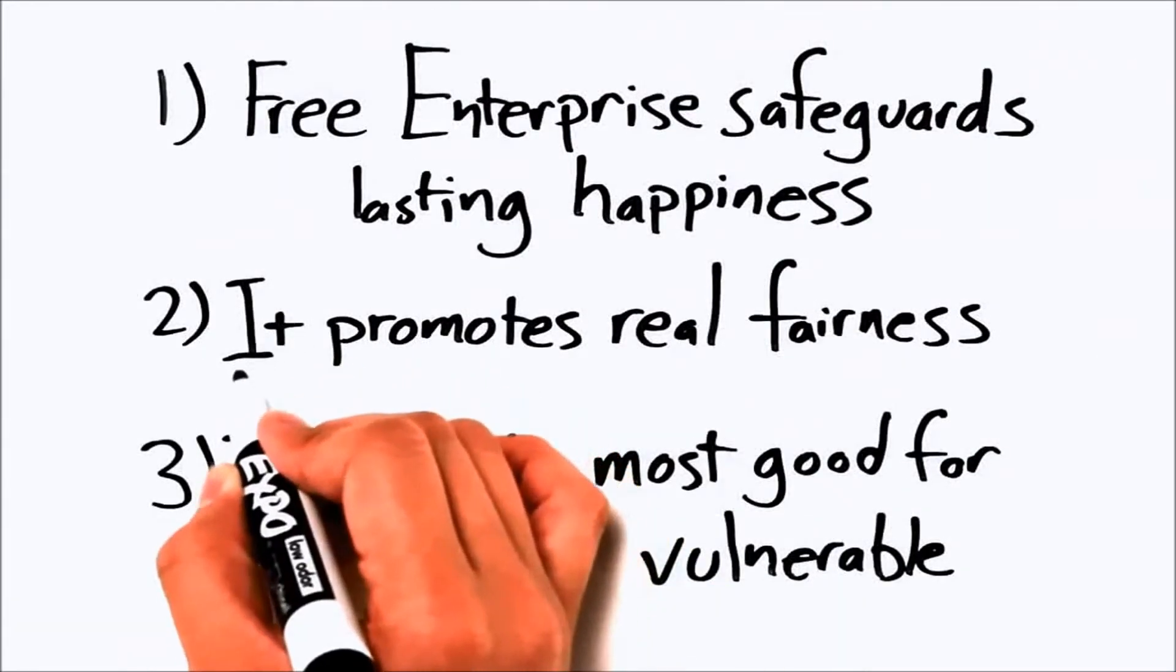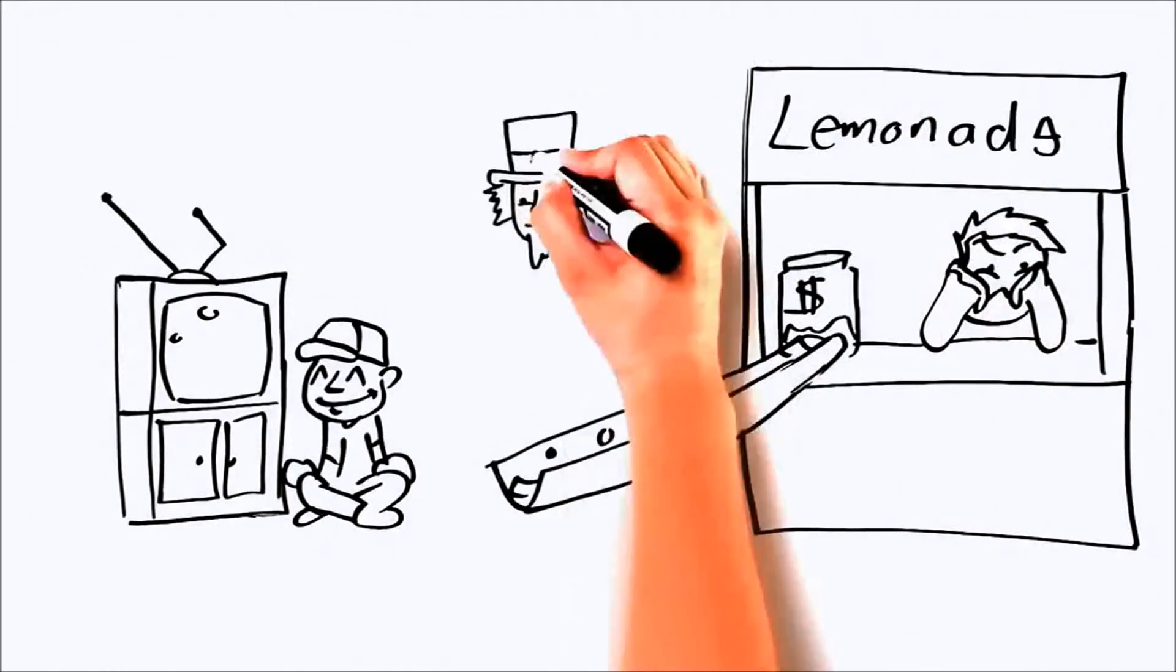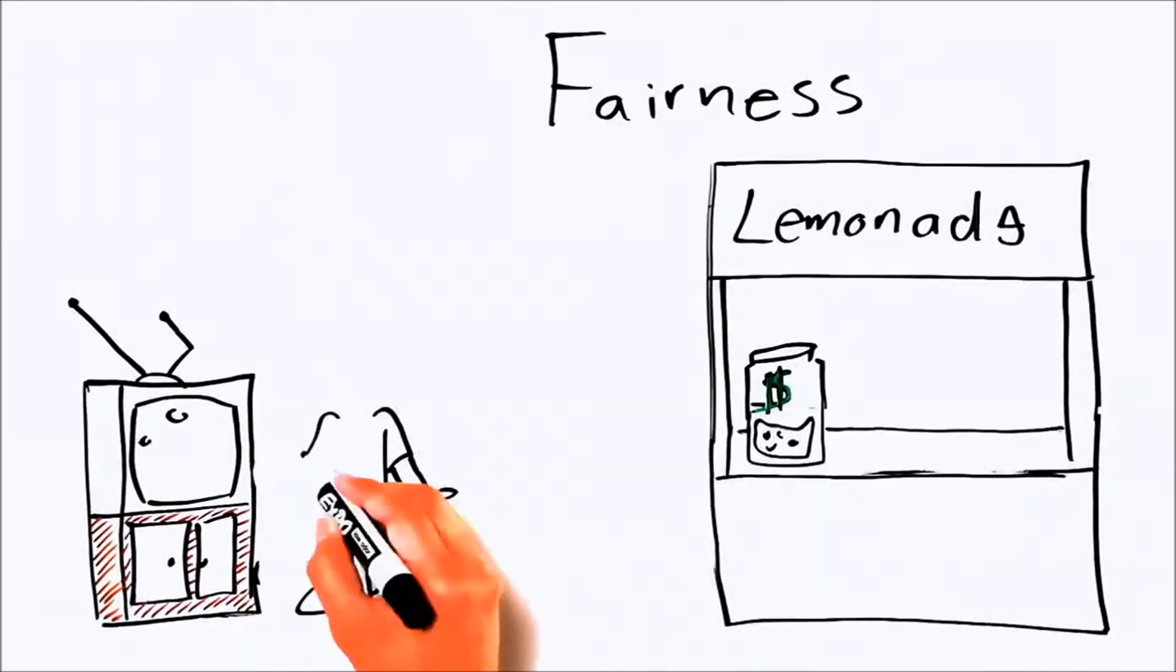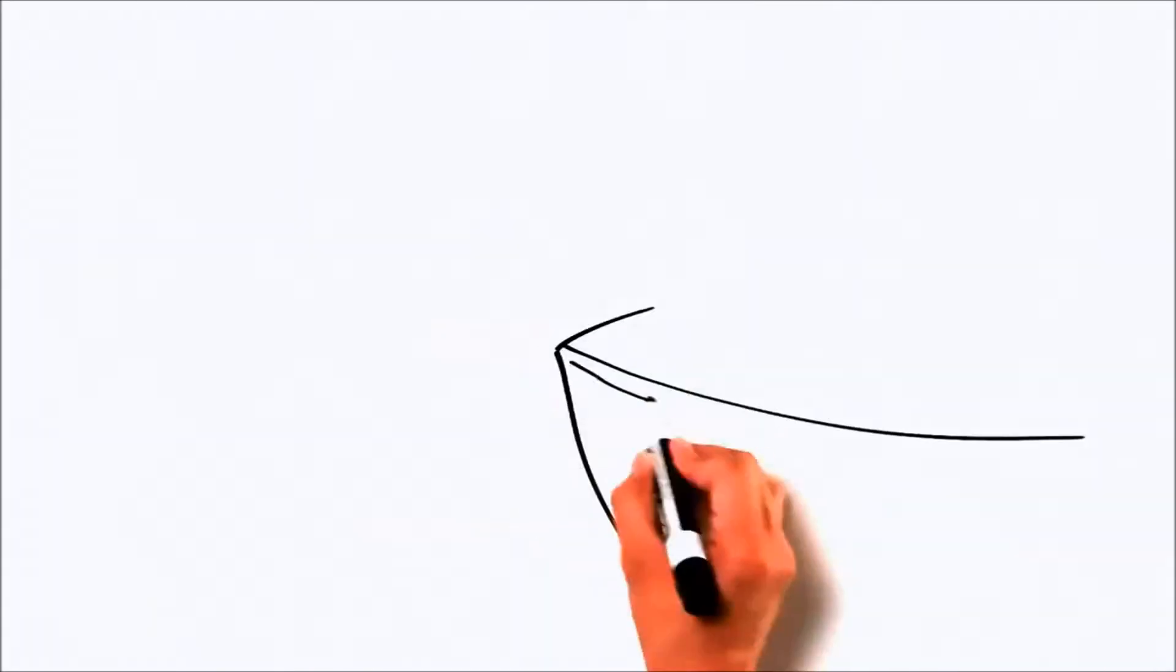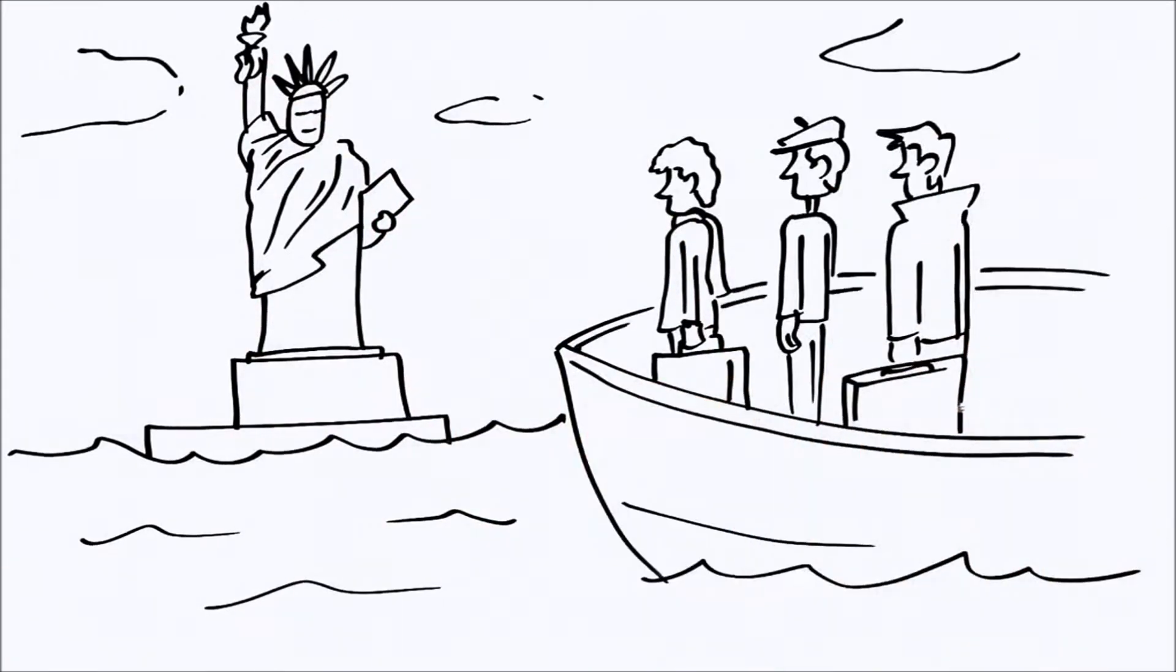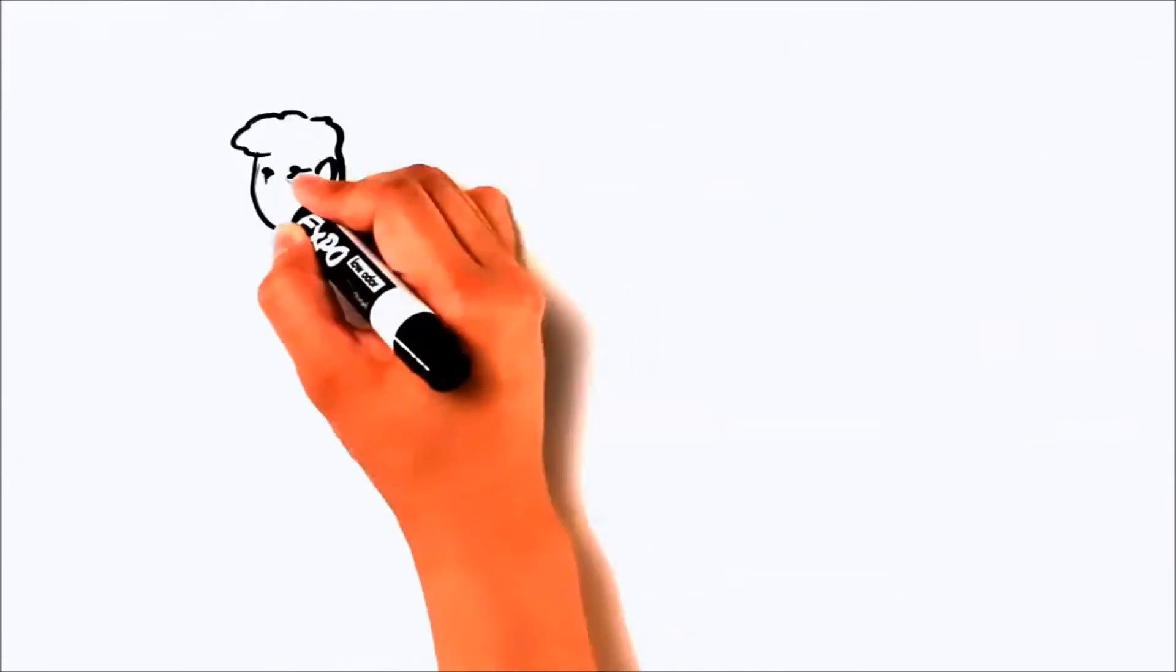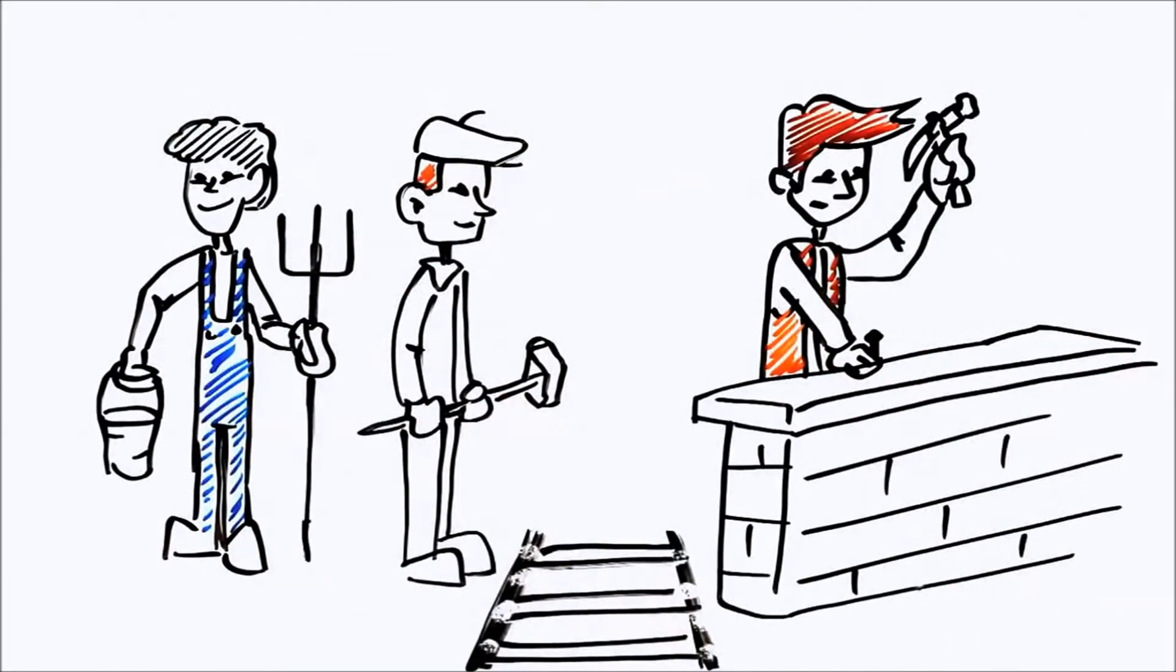The second moral element of free enterprise is fairness. Some people and politicians in our country want to convince you that fairness means spreading the wealth around. You agree? Or do you think that real fairness means rewarding merit and hard work? If you came from immigrants, ask yourself this, why did your ancestors come to this country? Was it to get some sort of fairer system of forced income redistribution? Or was it to be rewarded fairly for their hard work and merit? Most people would agree with your ancestors. They think that true fairness comes from rewarding merit and hard work.